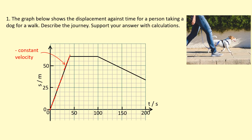Let's use that to figure out the velocity in the first section. We're going to use change in y over change in x. The change in y goes from 0 to 60 meters, and the change in x goes from 0 to 40 seconds. So 60 divided by 40 gives us 1.5 meters per second.